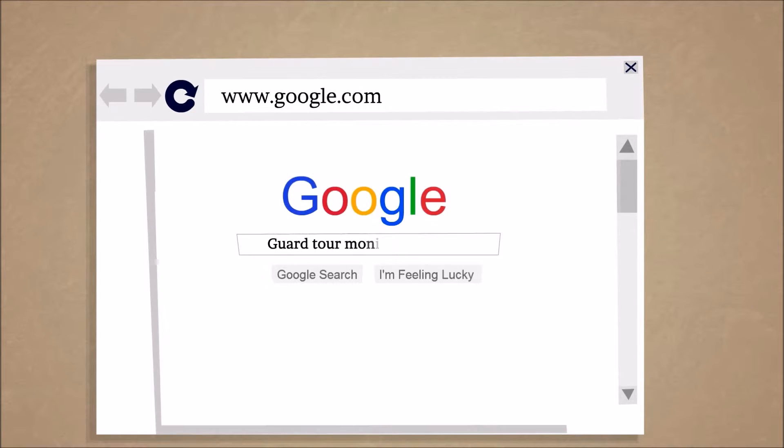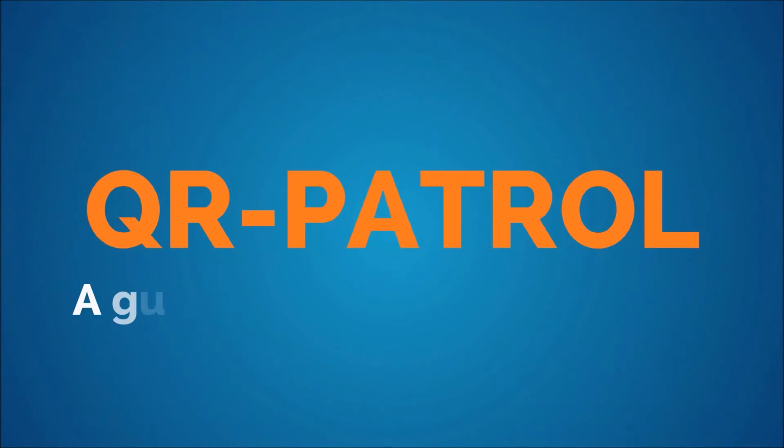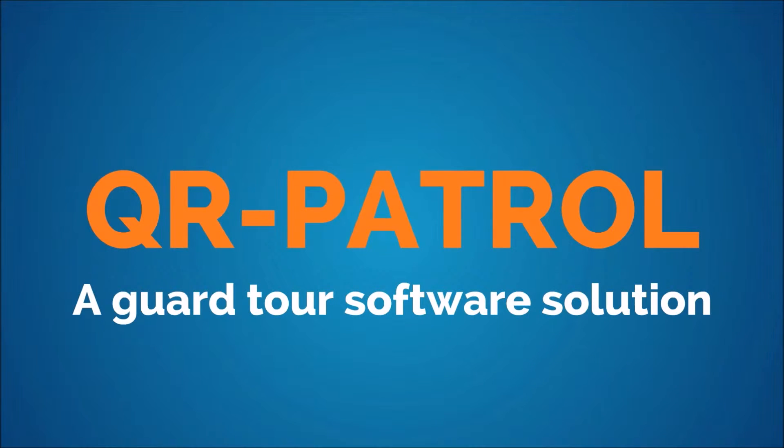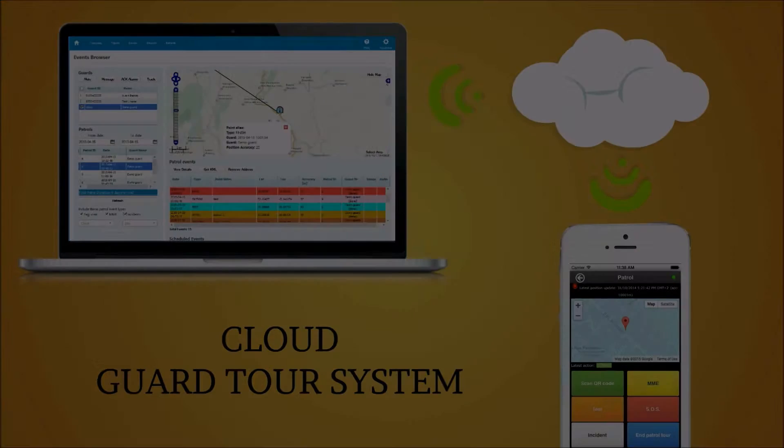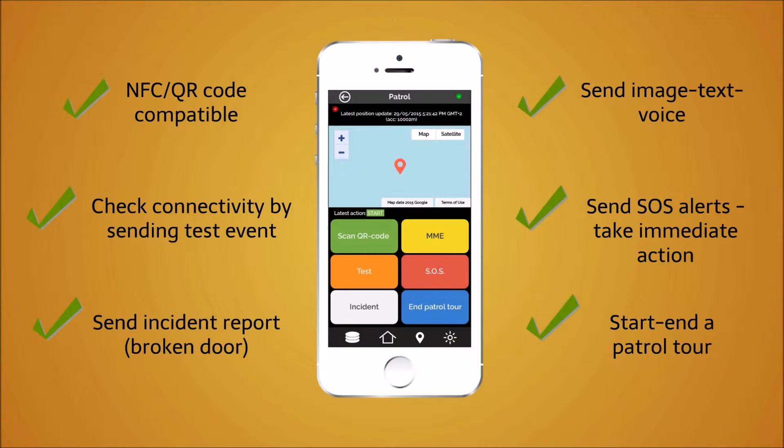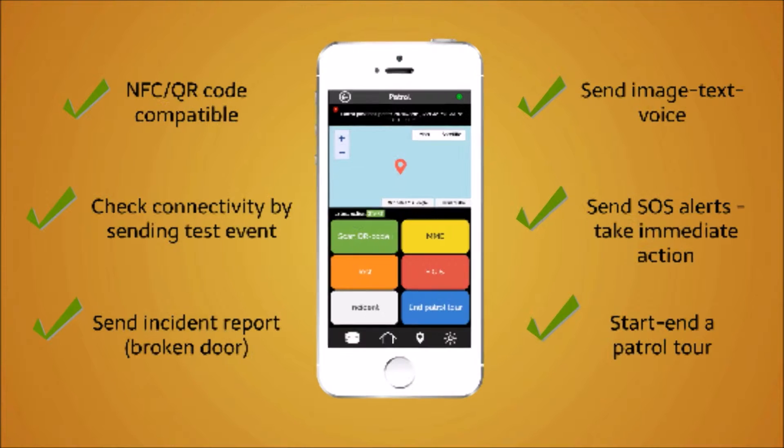And it will solve all of your problems. QR Patrol Guard Tour System will do the work for you. It's a great piece of software that is going to help you manage your guards and territories offering maximum prevention and minimum workload. And it's so simple to use. Six buttons will change the way you patrol.